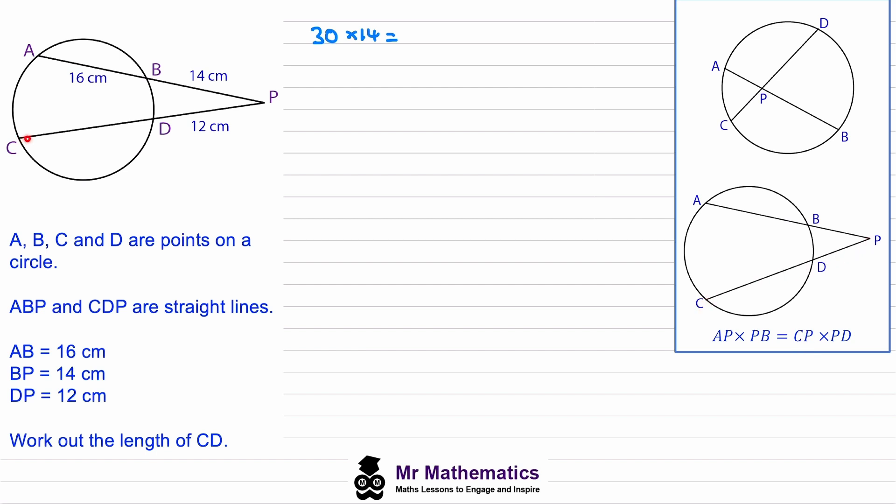And because we don't know CD let's call this y. So this entire length from C to P will be y plus 12. And then we're going to multiply that by the exterior length of 12 centimeters.